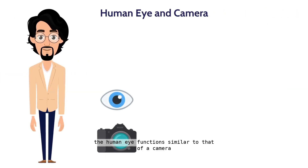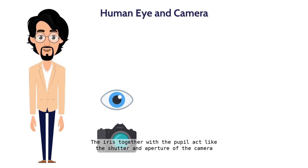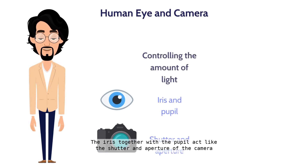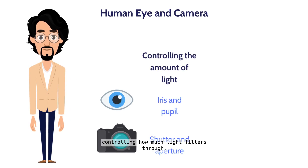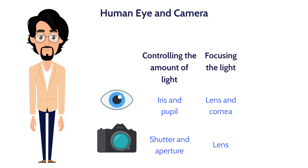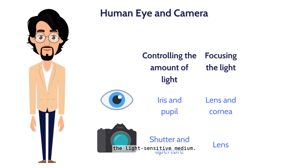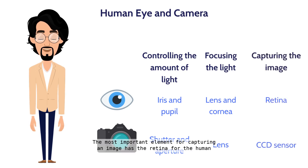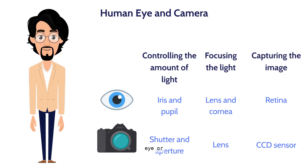The human eye functions similar to that of a camera. The eyes together with the pupil act like the shutter and aperture of the camera, controlling how much light filters through. The eye's lens and cornea work on the same principle as the system of lenses in a camera, helping to refract and focus light onto the retina — the light-sensitive medium. The most important element for capturing an image is the retina for the human eye, or the CCD sensor for the camera.